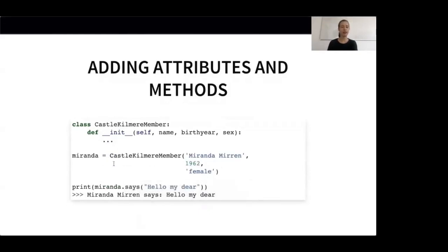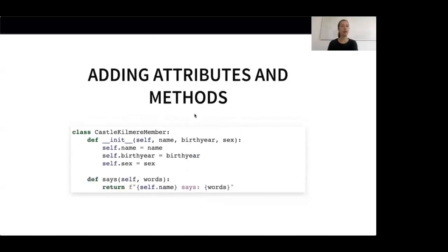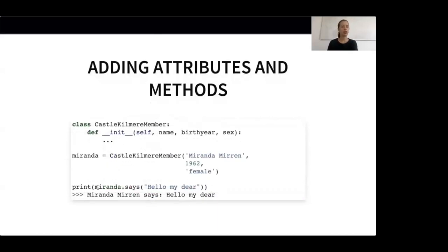We can create the Miranda instance by calling the class with the name, the birth year and the sex. The __init__ method is now called automatically with these attributes and returns an instance of the class, which is then assigned to a variable called Miranda. Note that the first argument of the init method is called self — it points towards an instance of the class whenever the method is called. We also added a method called says which adds behavior to our class, allowing our CastleKilmer member to say something. So when calling Miranda.says('hello my dear'), Miranda will talk to us.